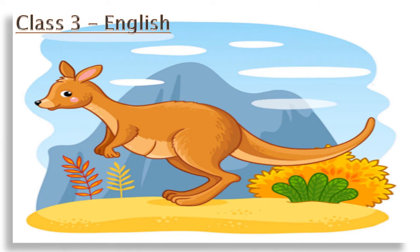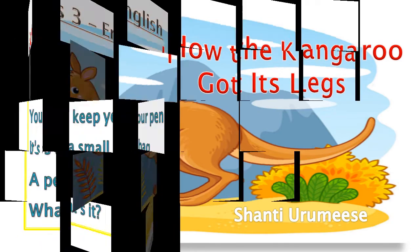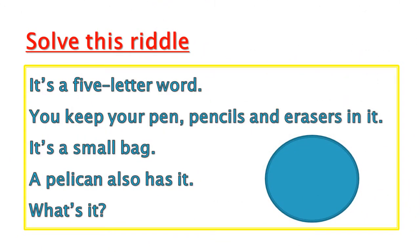Hi dear children, welcome to our English class. Today we are going to learn Lesson 3: How the Kangaroo Got Its Legs. Let us start with a vocabulary puzzle. It is a five-letter word. You keep your pens, pencils, and erasers in it. It is a small bag. A pelican also has it. What is it? It is a pouch.